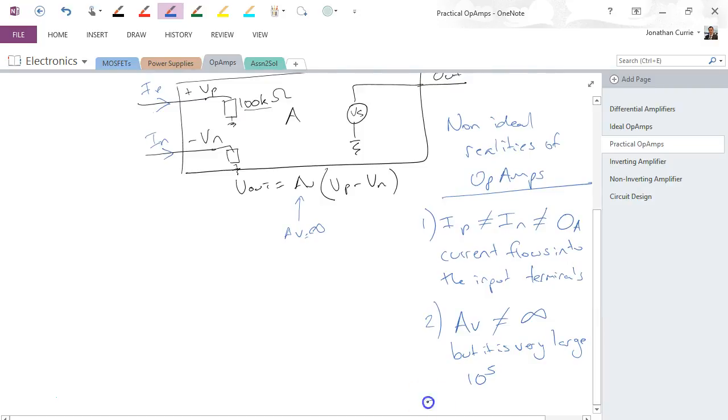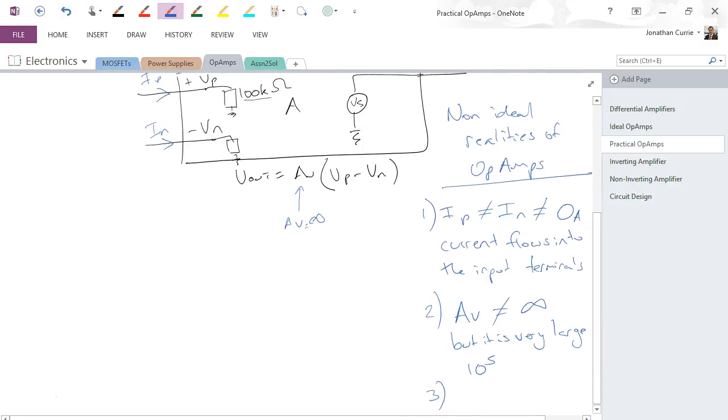And then finally, the four, and I'm going to use these in blue, is the DC realities. This expression here says that the output voltage times whatever the gain is equals, sorry, the voltage gain times the difference between those two inputs.